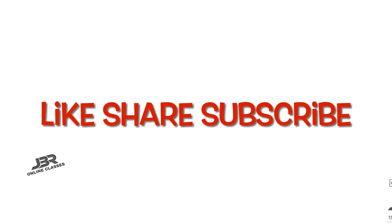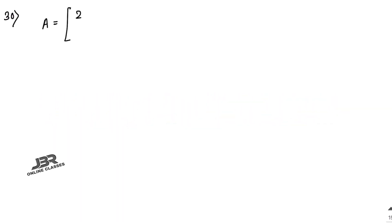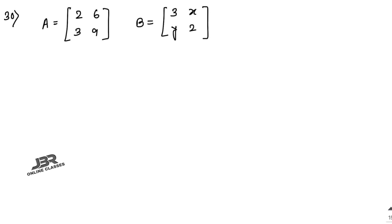Now the last sum for this video. If you like my video please share and subscribe. Here A equals [2,6; 3,9] and B equals [3,3; x,2] — wait, B has elements including x and y. A·B equals the zero matrix. Find the values of x and y.